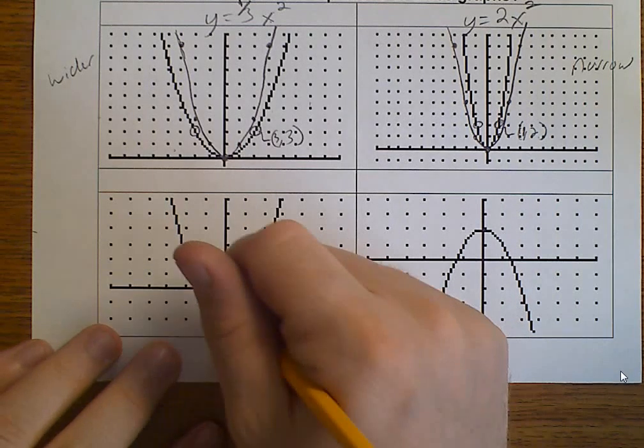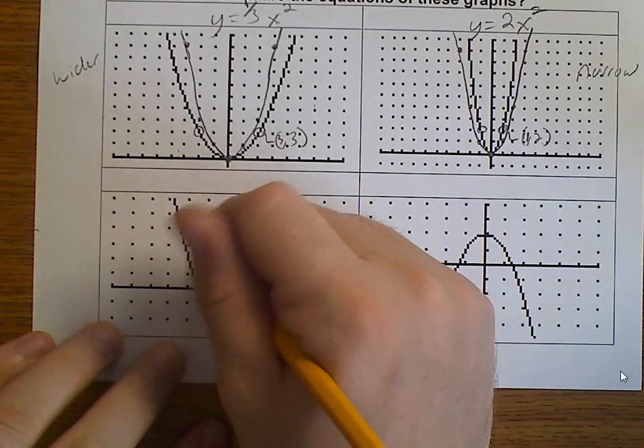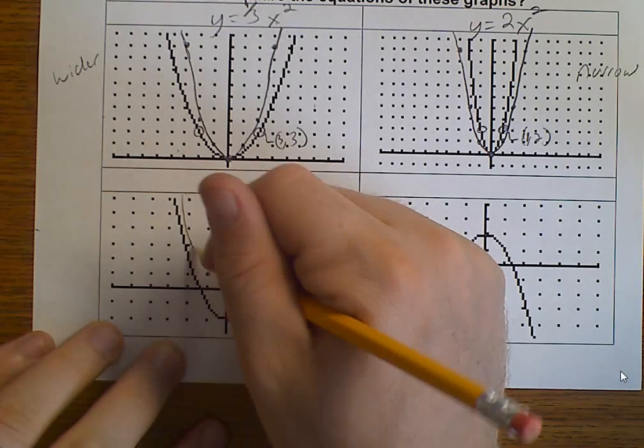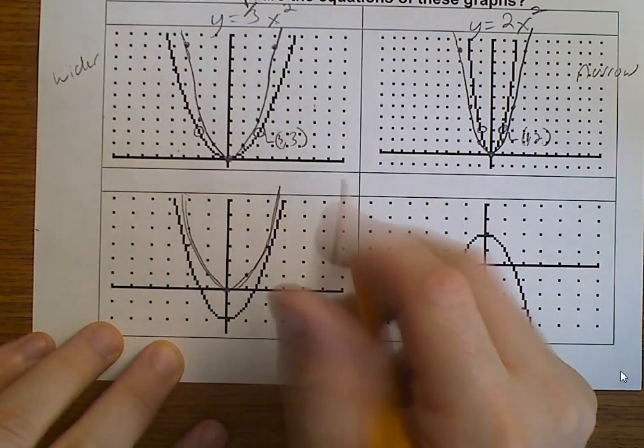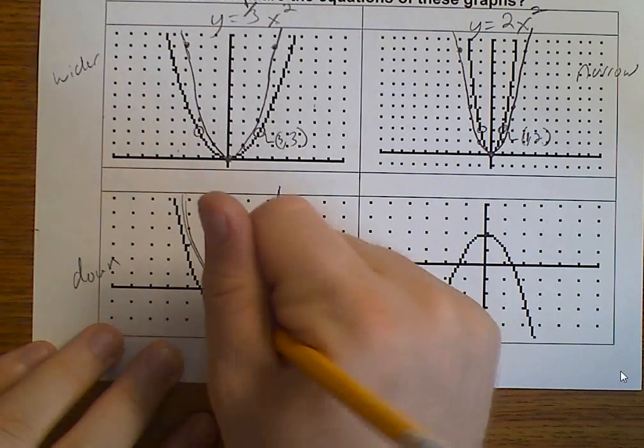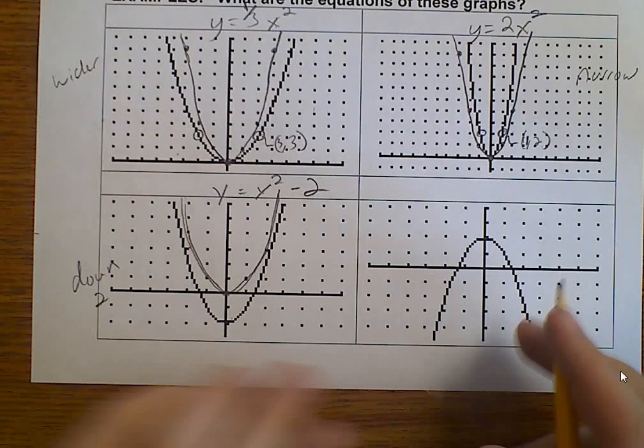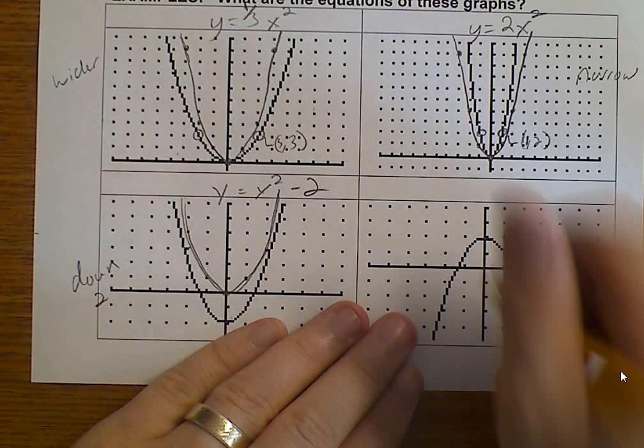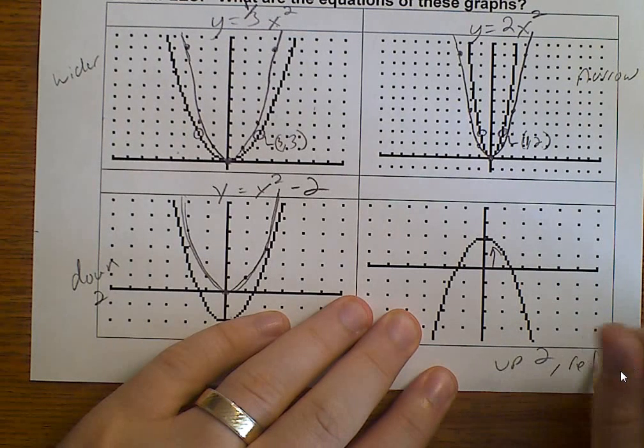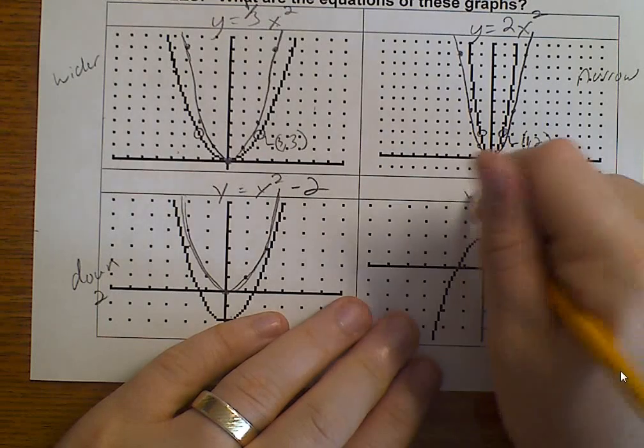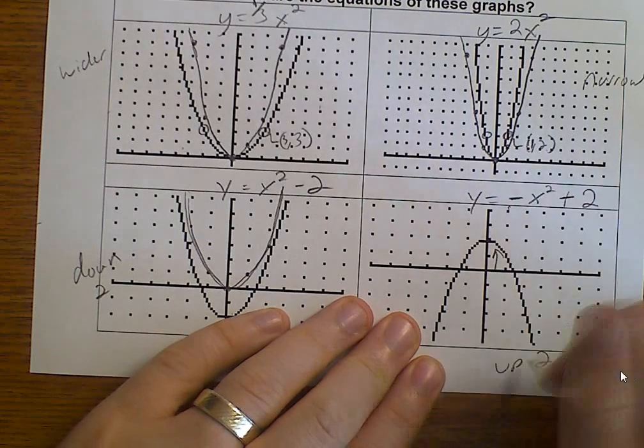Now, here, we have moved down and moved down by 2. So, this is y equals x squared minus 2. Now, this one is tricky. We've moved up 2, but we've also reflected. So, that means this is going to be y equals a negative x squared. The negative is for the reflection. Plus 2 for moving it up.